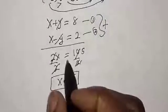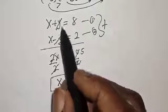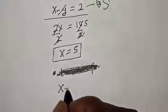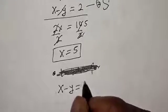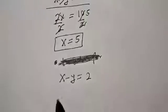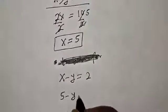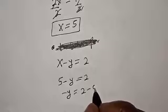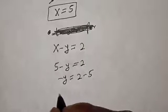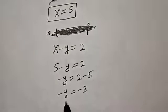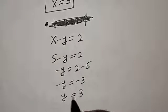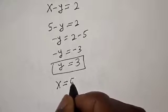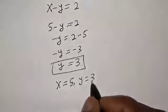Now we can substitute x = 5 into either equation. Using equation 2: x − y = 2. When x is 5, we have 5 − y = 2, so −y = 2 − 5, which gives −y = −3, therefore y = 3. Our final answers are x = 5 and y = 3.